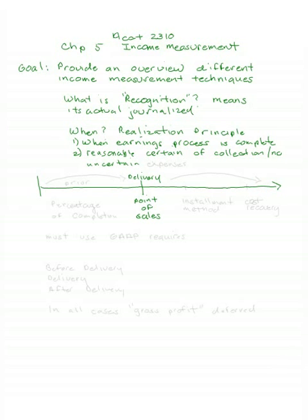Admittedly, most transactions are recognized at the point of sale, but we're going to learn some other points. We're learning the exceptions to the general rule in this chapter. Sometimes we recognize revenue before the point of delivery, and when we do that, we'll be looking at percentage of completion revenue recognition.